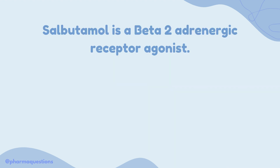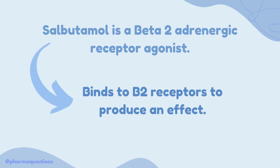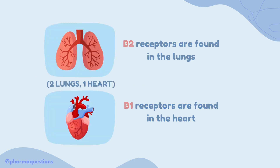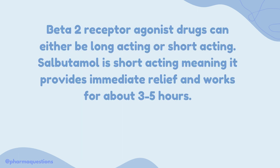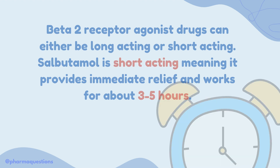Salbutamol is a beta-2 adrenergic receptor agonist, meaning it binds to beta-2 receptors to produce an effect. Beta-2 receptor agonist drugs can either be long-acting or short-acting. Salbutamol is short-acting, meaning it provides immediate relief and works for about 3-5 hours.